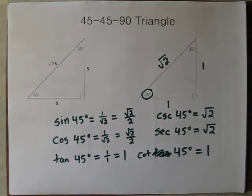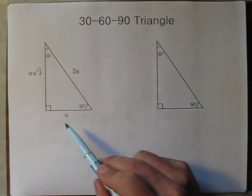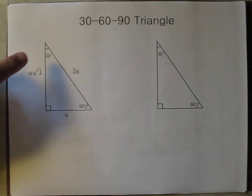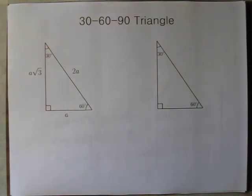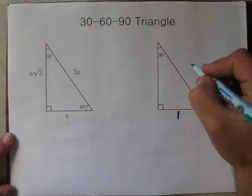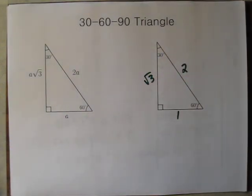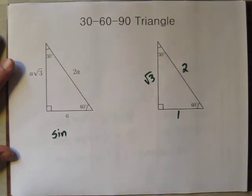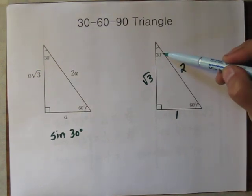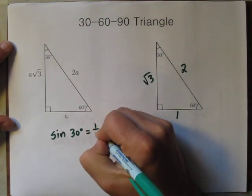Now there's another special right triangle: the 30-60-90. Here, the relationship is that the hypotenuse is double the shortest side, and the longer leg is √3 times the shortest side. So if we make the shortest side 1, the hypotenuse would be twice 1, which is 2. And 1 times √3 is simply √3. Now we can find sine 30 degrees.